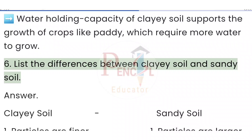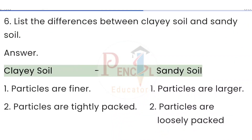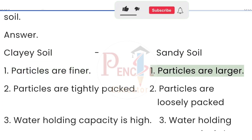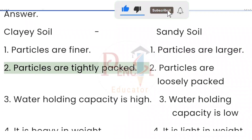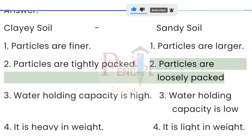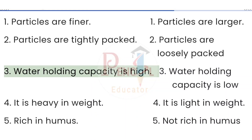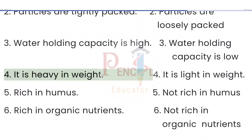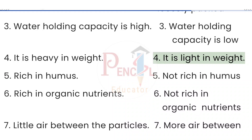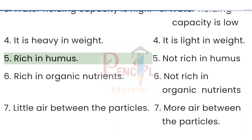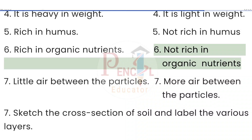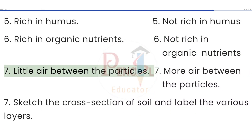Question 6: List the differences between clay soil and sandy soil. Answer — Clay soil: (1) particles are finer, (2) particles are tightly packed, (3) water holding capacity is high, (4) it is heavy in weight, (5) rich in humus, (6) rich in organic nutrients, (7) little air between the particles.